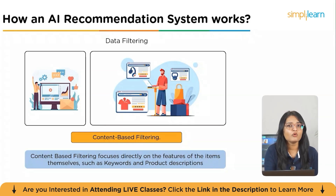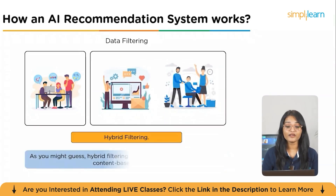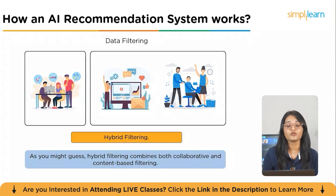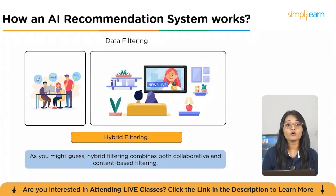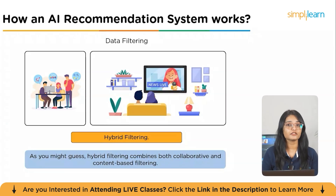Content-based filtering also works well when items are new or niche and haven't received enough ratings or interactions yet. And lastly, we have hybrid filtering, which combines both collaborative and content-based filtering to overcome the limitations of each. For example, OTT platforms like Apple TV, Prime, and Netflix combine collaborative filtering based on user ratings with content-based filtering based on genre and actors.